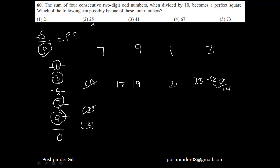The third option says 41. That means the numbers are 41, 43, 39, and 37. We already know that 7+9+1+3 = 20 in the units. Adding the tens digits: 4+4+3+3 = 14, carry the 2, giving us 160. So 37+39+41+43 = 160. If you divide 160 by 10, you get 16, which is a perfect square. So the third option is your answer.